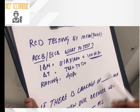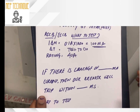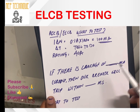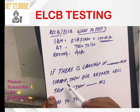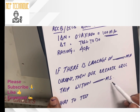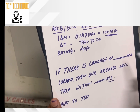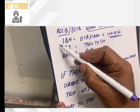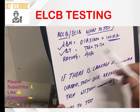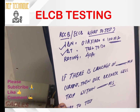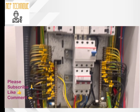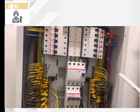Now we are going to check: if there is any earth leakage, within how many milliamperes will the breaker trip, and within how many milliseconds? We are going to check both IΔN and ΔT of the ELCB. The panel is live right now, so we are going to do the test live using this meter.